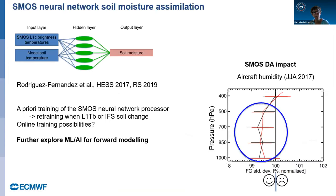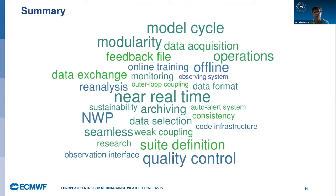We use a neural network for scatterometer data assimilation. The training of the neural network shows improvement in aircraft humidity fit to observations at different pressure levels — a decrease in the standard deviation of first-guess departures when using it, which is beneficial to our system. We did the training a priori and need to focus on online training possibilities. We also want to further explore machine learning and AI for forward modeling. In summary, tackling coupled land-atmosphere data assimilation involves many technical challenges across methodology, infrastructure, observing systems, and observation operators. Thank you for your attention.